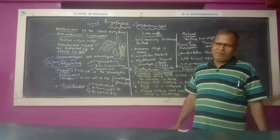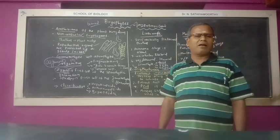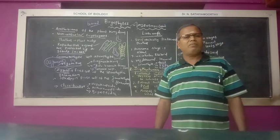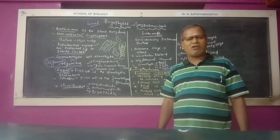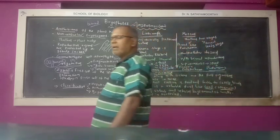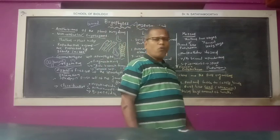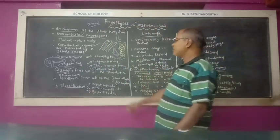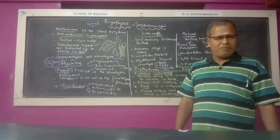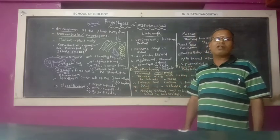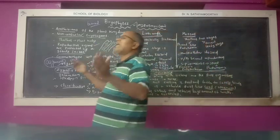So the key features of bryophytes are: they are the amphibians of the plant kingdom, they are non-vascular cryptogams, they have a thallose plant body, reproductive organs are protected by a sterile jacket, oogamous kind of sexual reproduction occurs, and a clear alternation of generation is seen. The gametophytic phase is dominant over the sporophytic phase. Classification includes Hepaticopsida, Anthocerotopsida, and Bryopsida — three divisions. Bryophytes are classified into liverworts and mosses.